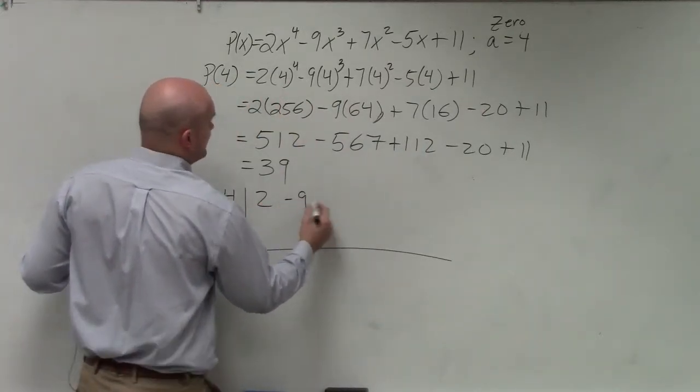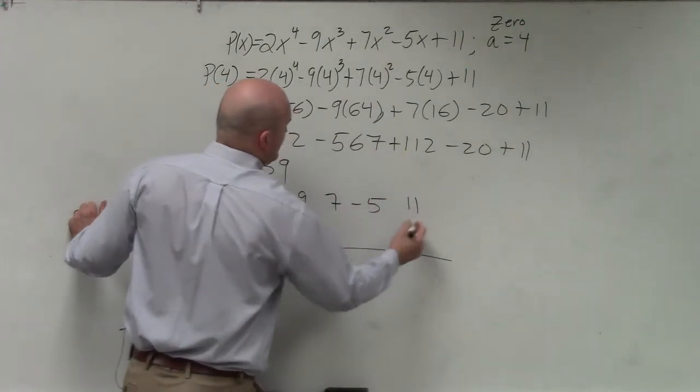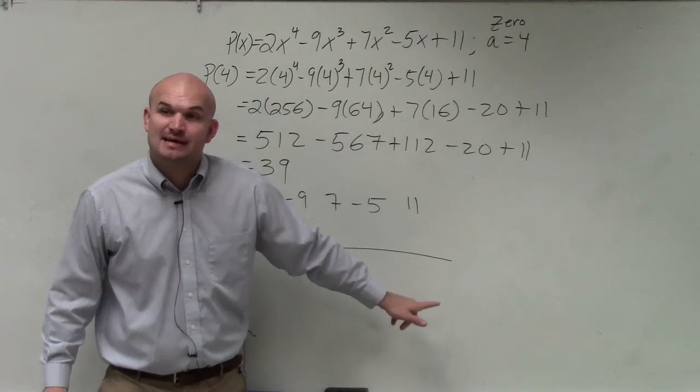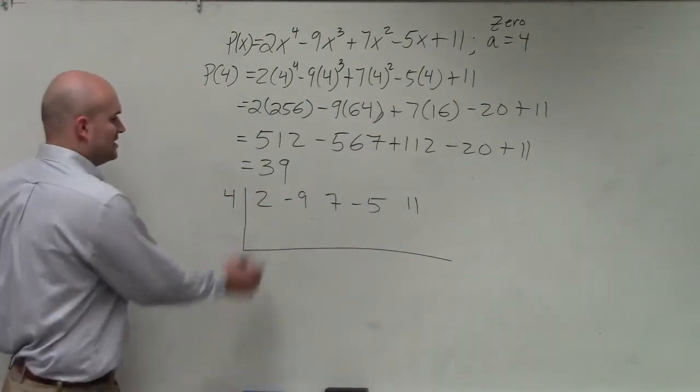2, negative 9, 7, negative 5, 11. And what we should have is the remainder is going to be exactly the same, meaning this would not be a zero. So let's check it.